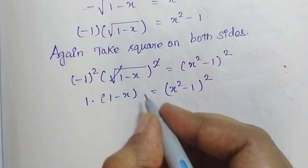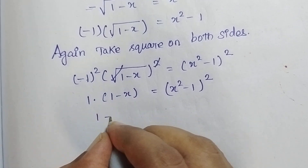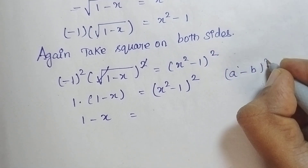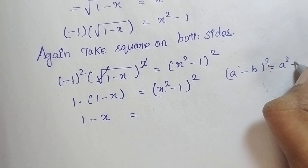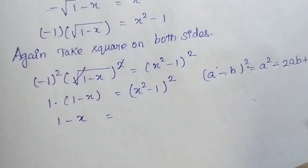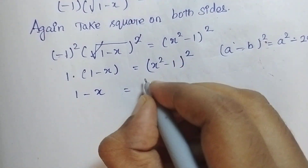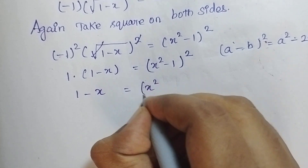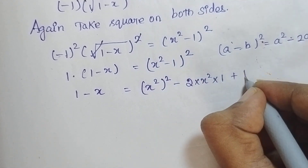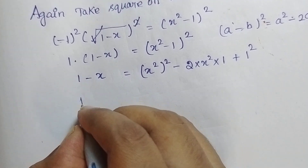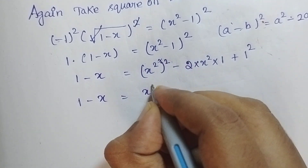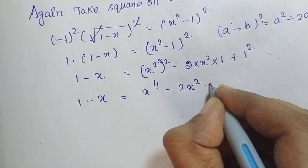Now I am going to simplify this. 1 - x is equal to (x² - 1)². This is in the form (a - b)² = a² - 2ab + b². So applying this formula: a is x², so x² whole square minus 2 into x² into 1 plus 1 square. Therefore 1 - x = x⁴ - 2x² + 1.